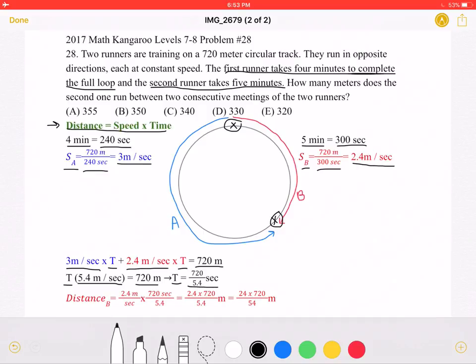And we can leave it like that for now because we know that we're looking for the distance that runner B runs. And we don't need to simplify the time right now. So the distance of runner B is equal to speed times time, which we have just found. We know that this simplifies to 2.4 times 720 over 5.4 meters.